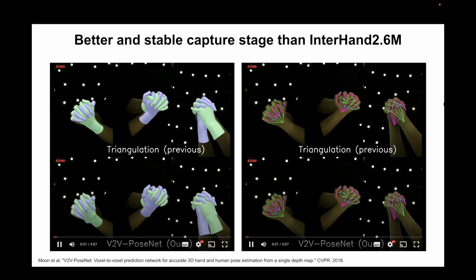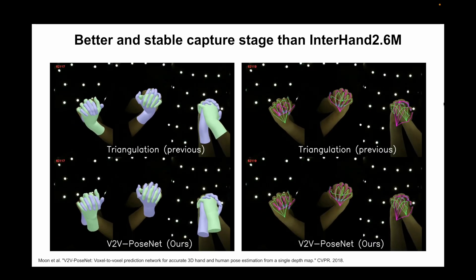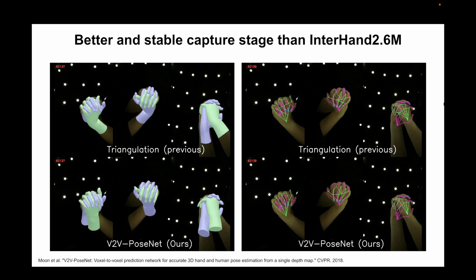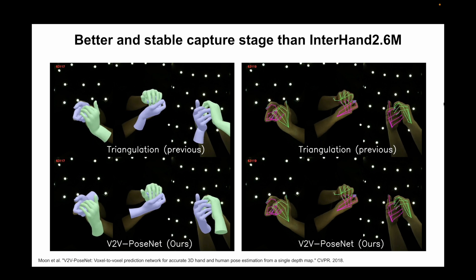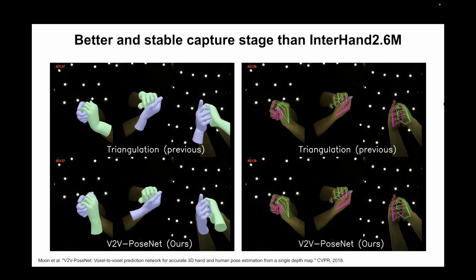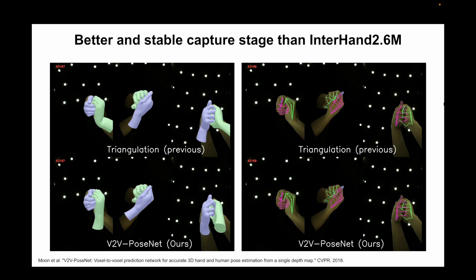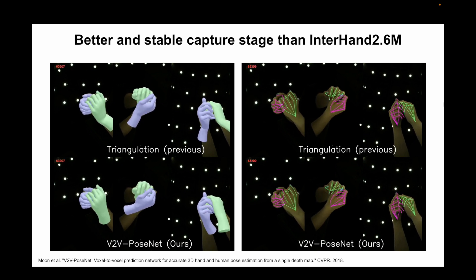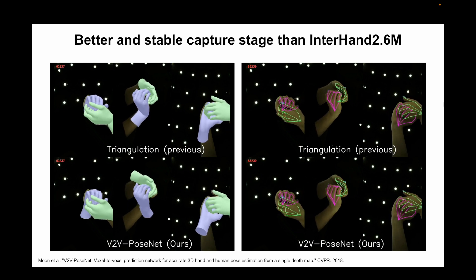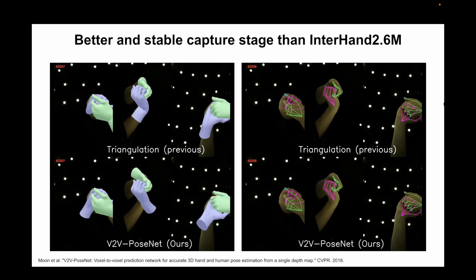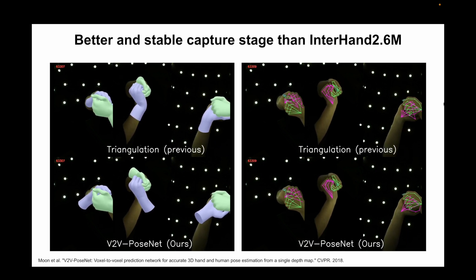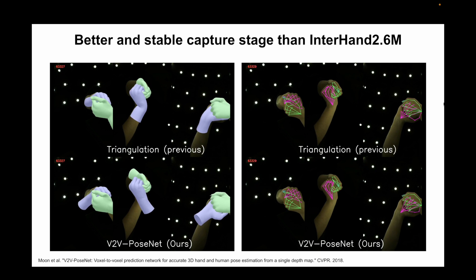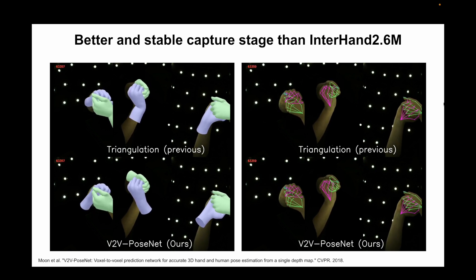The previous InterHand 2.6M obtained 3D ground truth by triangulating 2D keypoint detections into 3D space using 100 cameras. We found that this triangulation-based approach suffered from jittering results, as the RANSAC algorithm could pick very different viewpoints even from very close frames when keypoints are barely visible. Instead, we trained a powerful deep 3D CNN, V2B PoseNet, which takes a voxel-like 3D scan of each hand and outputs 3D keypoint coordinates, producing much more accurate and stable results.